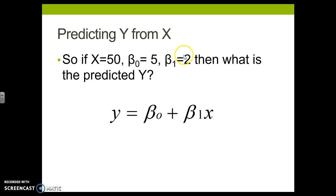So we plug in 5, we plug in 2, and we plug in 50. 50 times 2 is 100 plus 5. So our predicted Y value would be 105. That is how we're going to be using regression.